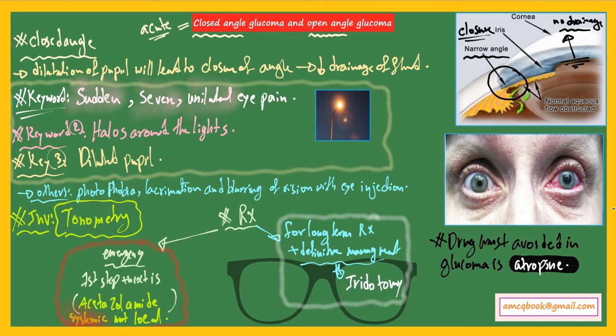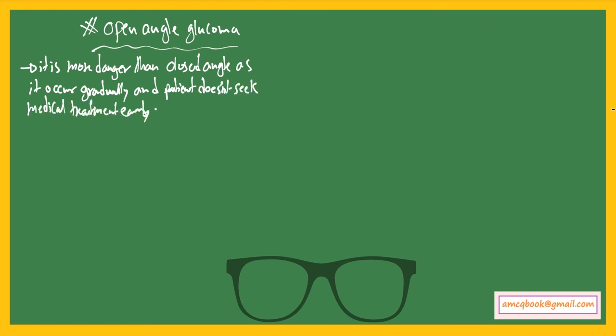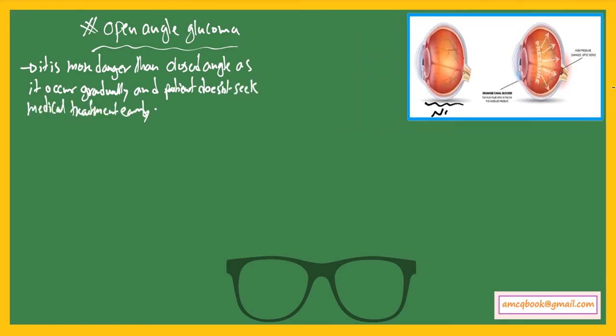Now let's talk about open angle glaucoma. It's more dangerous than closed angle glaucoma as it occurs gradually and patients usually don't seek medical treatment early. If you look at the picture on the top right corner, the left shows a normal eye and the right shows open angle glaucoma.